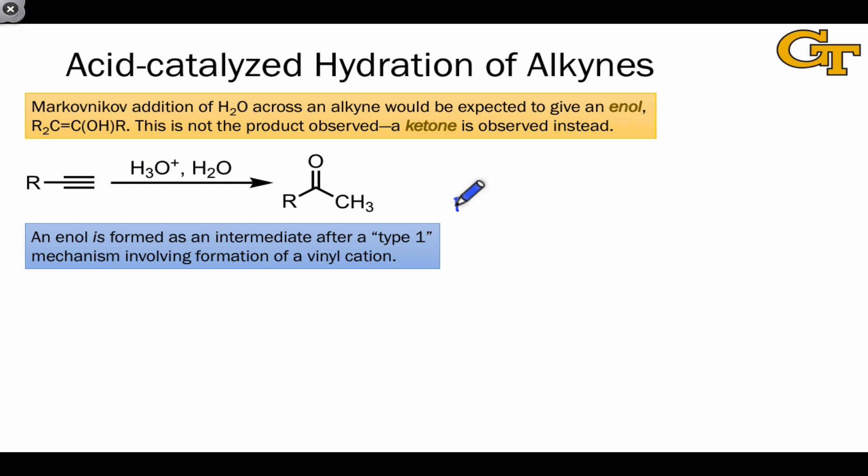Markovnikov-type addition across the atoms of an alkyne would be expected to give a product in which OH is connected to the more substituted carbon and H to the less substituted carbon. Of course, this is only relevant for terminal alkynes in which the terminal carbon has a different substitution pattern than the internal carbon. This amounts to Markovnikov selectivity since the nucleophile OH is connected to the more substituted position in the product.